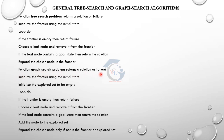The function graph search returns a solution or failure. The graph search problem: if we take a solution, we may or may not have a solution — it returns a solution or failure. Initialize the frontier using the initial state. If we choose the frontier and want to choose the leaf node, we further expand. If the leaf node contains a goal state, then it returns the solution.